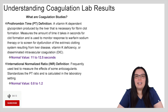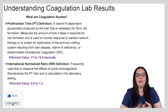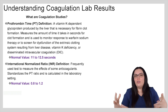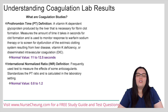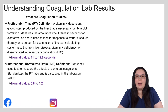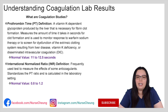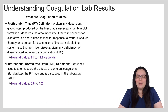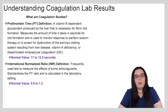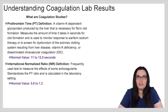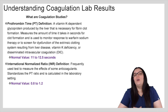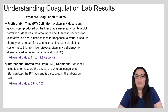When we're looking at coagulation studies, we're looking at one of three things: either our PT, our INR, or our APTT. PT, also known as prothrombin time, is a vitamin K-dependent glycoprotein produced by the liver that is necessary for fibrin clot formation. It measures the amount of time it takes in seconds for clot formation and is used to monitor response to warfarin sodium therapy, or to screen for dysfunction of the extrinsic clotting system resulting from liver disease, vitamin K deficiency, or DIC — disseminated intravascular coagulation. A normal value for PT would be between 11 to 12.5 seconds.